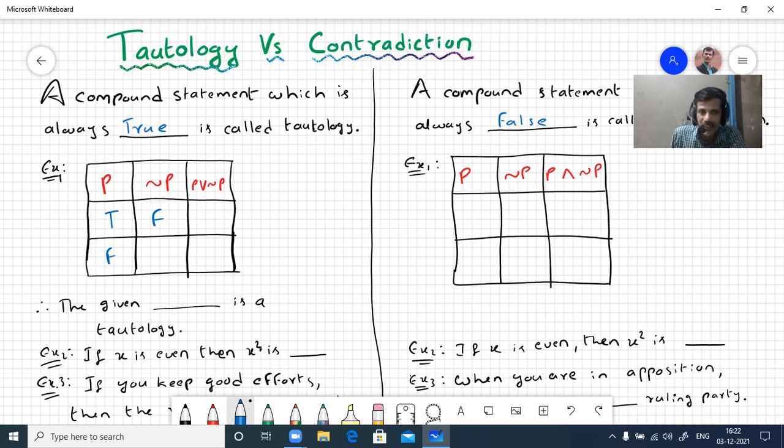P or Q disjunction, we have learned in earlier videos. It is false only when both statements are false. So one true is also there, then this is true, this is also true.